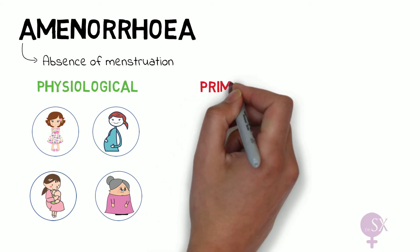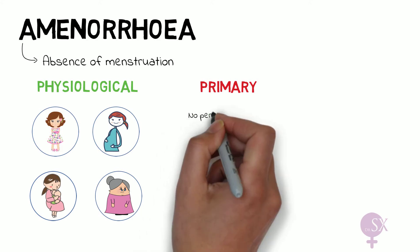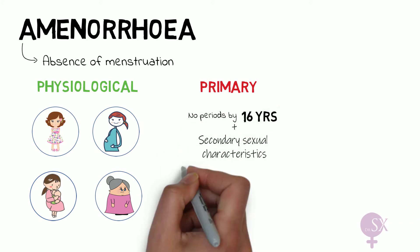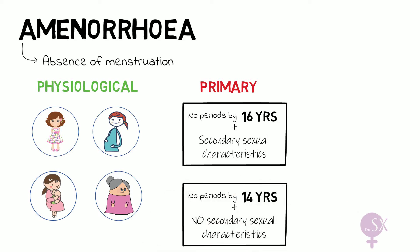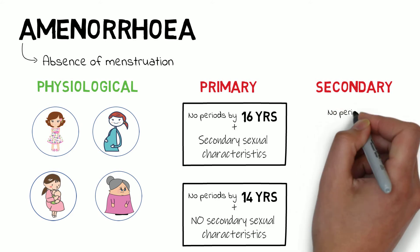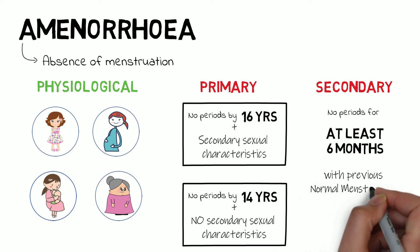Then we have primary amenorrhea, which occurs either when there are no periods by the age of 16 with the presence of secondary sexual characteristics, or if there are no periods by the age of 14 with no secondary sexual characteristics. Then we have secondary amenorrhea, which refers to the absence of periods for at least six months with previous normal menstruation.